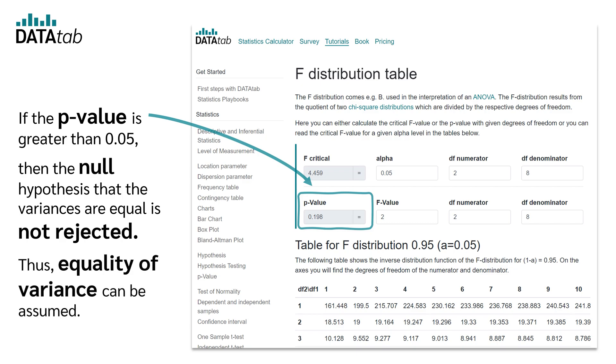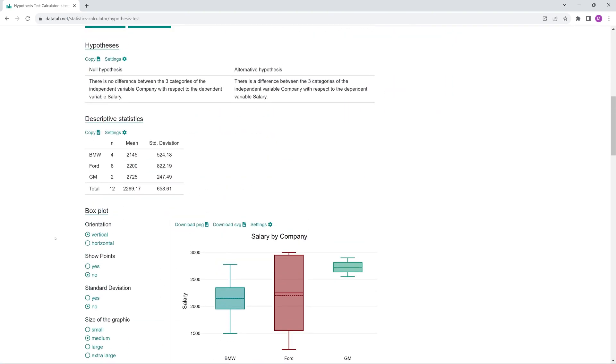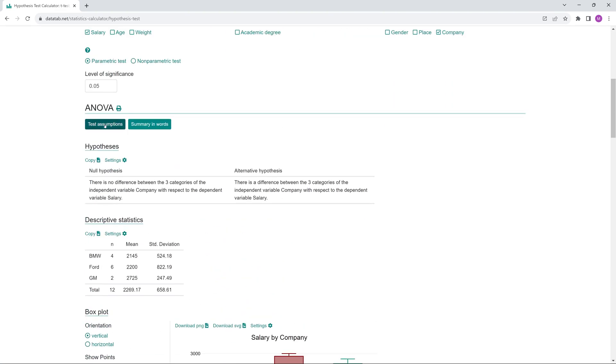If you use DATAtab and calculate an analysis of variance, you can find Levene's test under test assumptions.